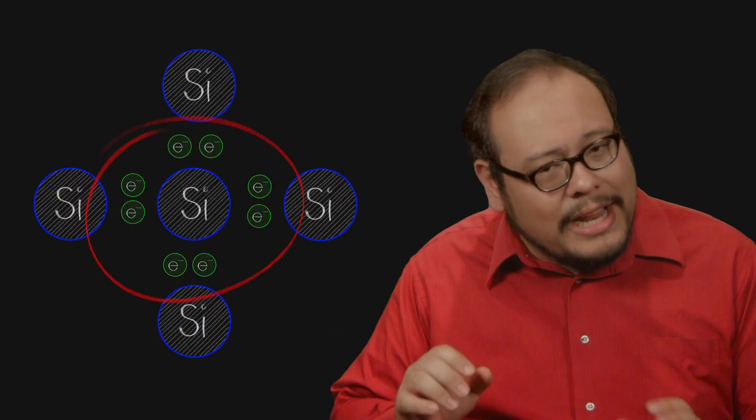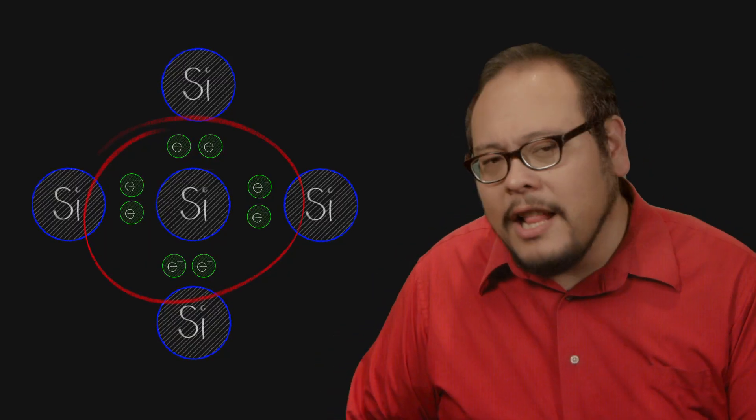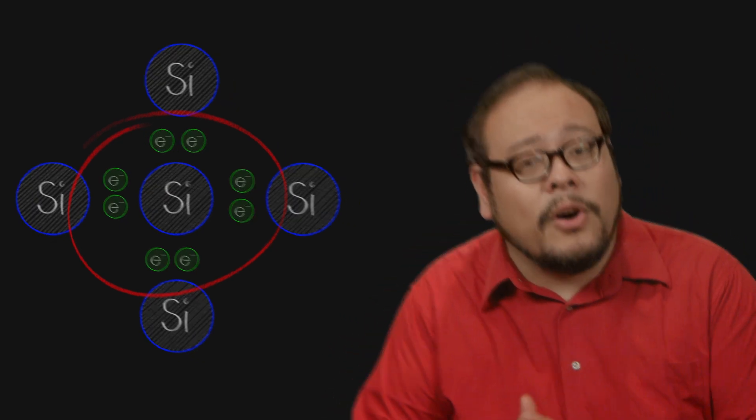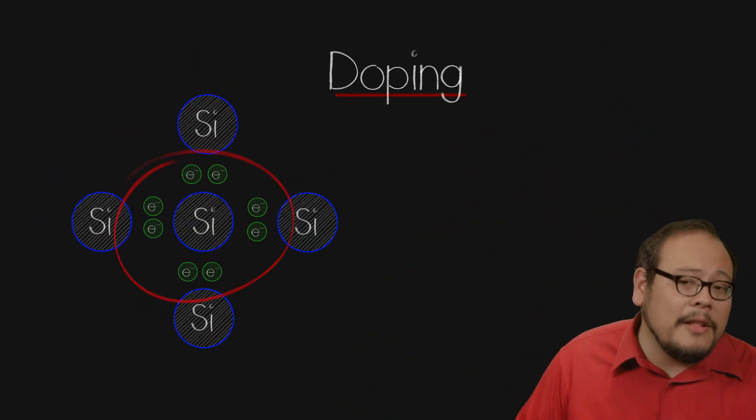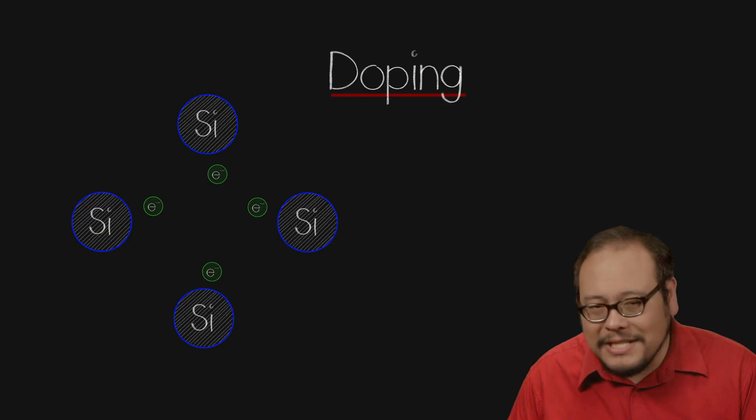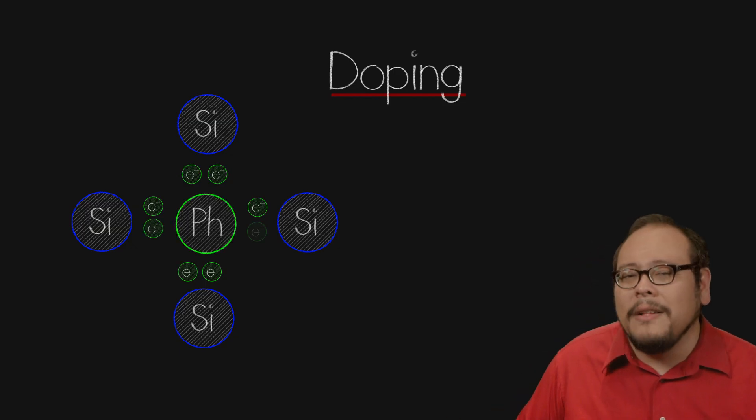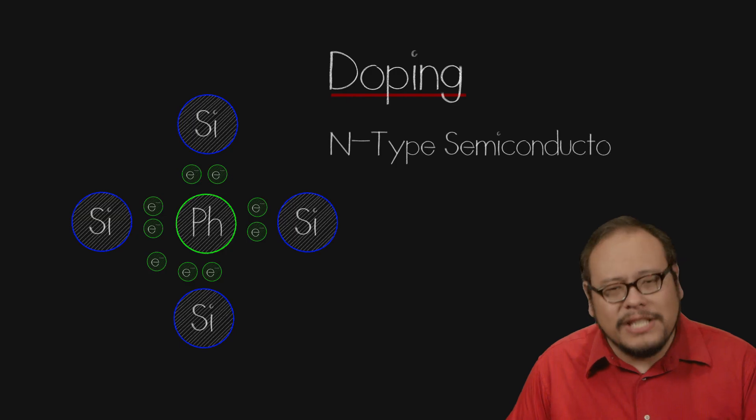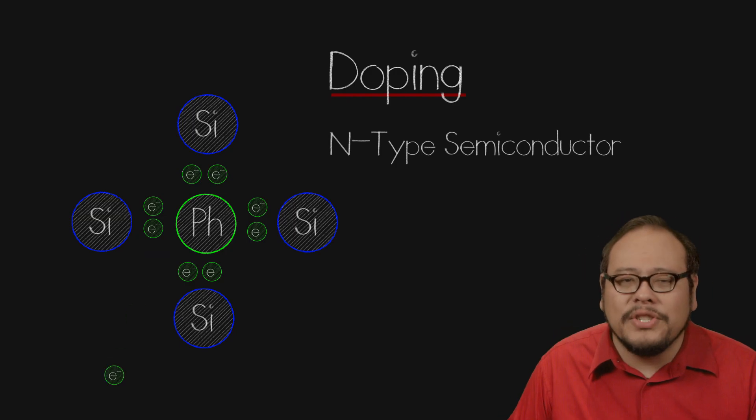But if we inject a small amount of a different element, we can create different kinds of conductivity in the silicon crystal, a process called doping. Add a small amount of phosphorus which has 5 electrons in its valence shell and we create an N-type semiconductor. Phosphorus fits in the tetrahedral crystal but it has 1 extra electron.